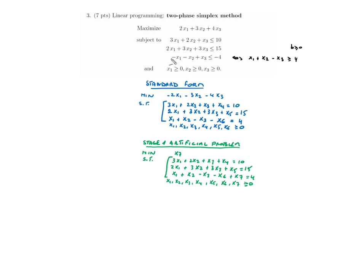Because we have a minus 4 here, we multiply the equation by minus 1, so the less-than-or-equal becomes greater-than-or-equal. We want the right-hand side values to be non-negative. We have a maximization problem and can turn it into a minimization problem by multiplying the objective function by minus 1.